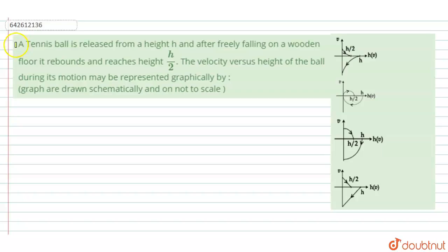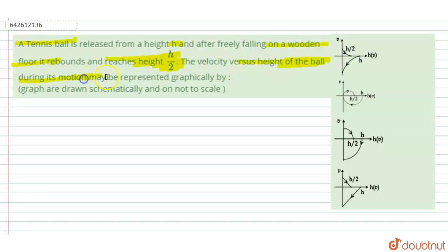Hello, welcome to Doubtnut. In this question, a tennis ball is released from height h and after free falling on a wooden floor, it rebounds and reaches height h/2. We need to determine how velocity versus height of the ball during its motion may be represented graphically.